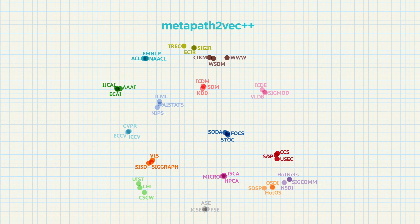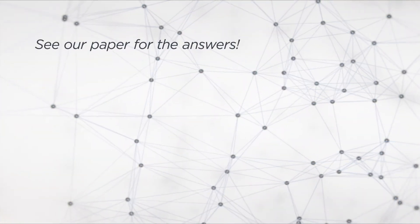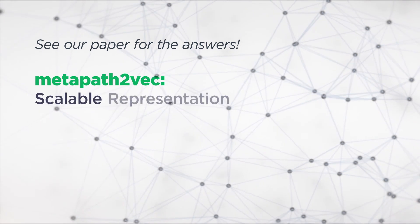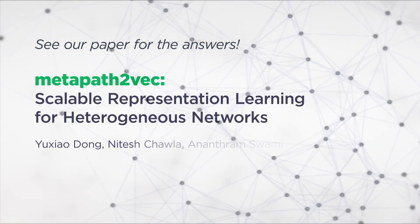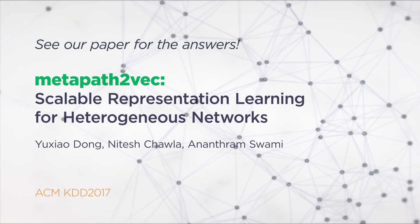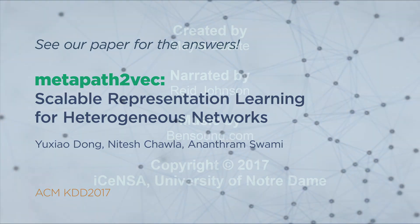At the top right, we can observe the big AI cluster, which includes artificial intelligence, natural language processing, machine learning, data mining, information retrieval, and computer vision. For technical details and the open source data and code, see our paper in KDD 2017 for more information. Thanks for watching.